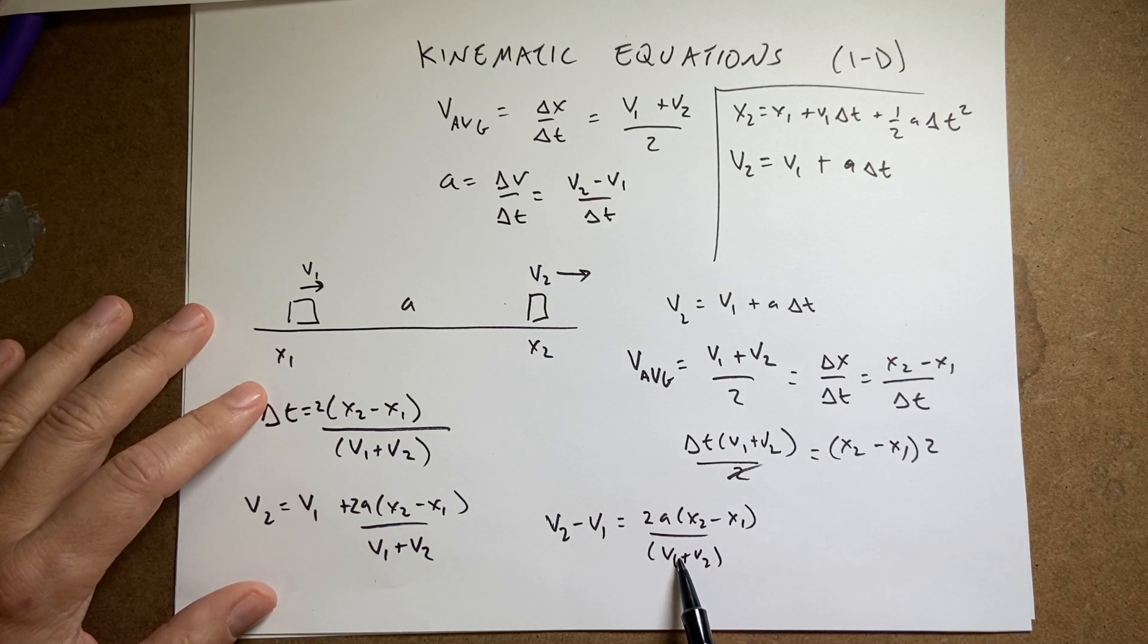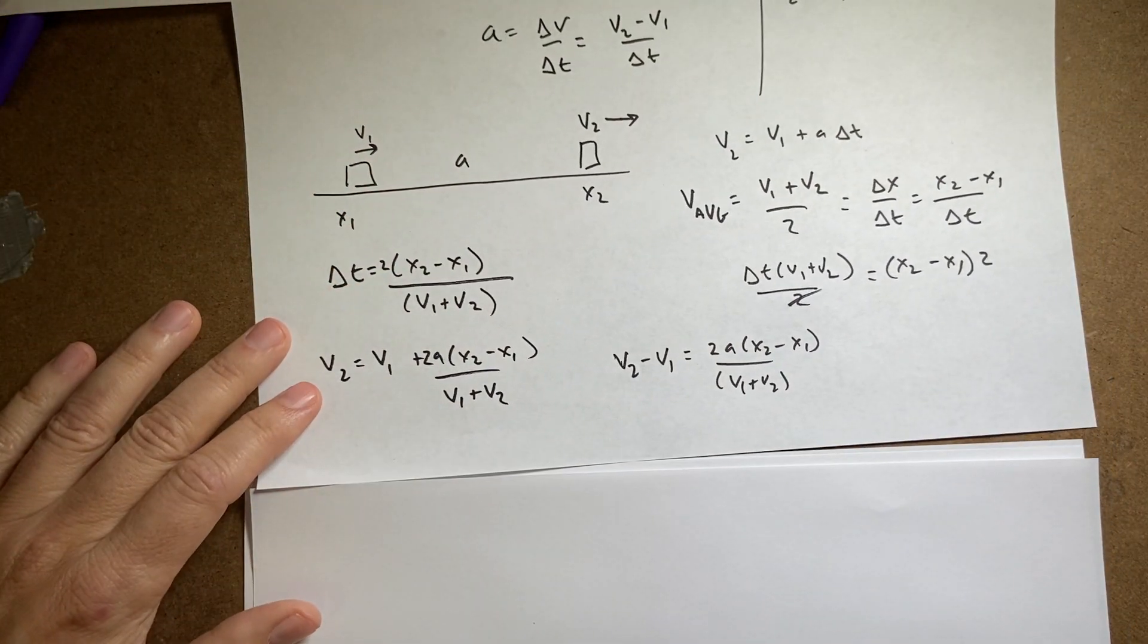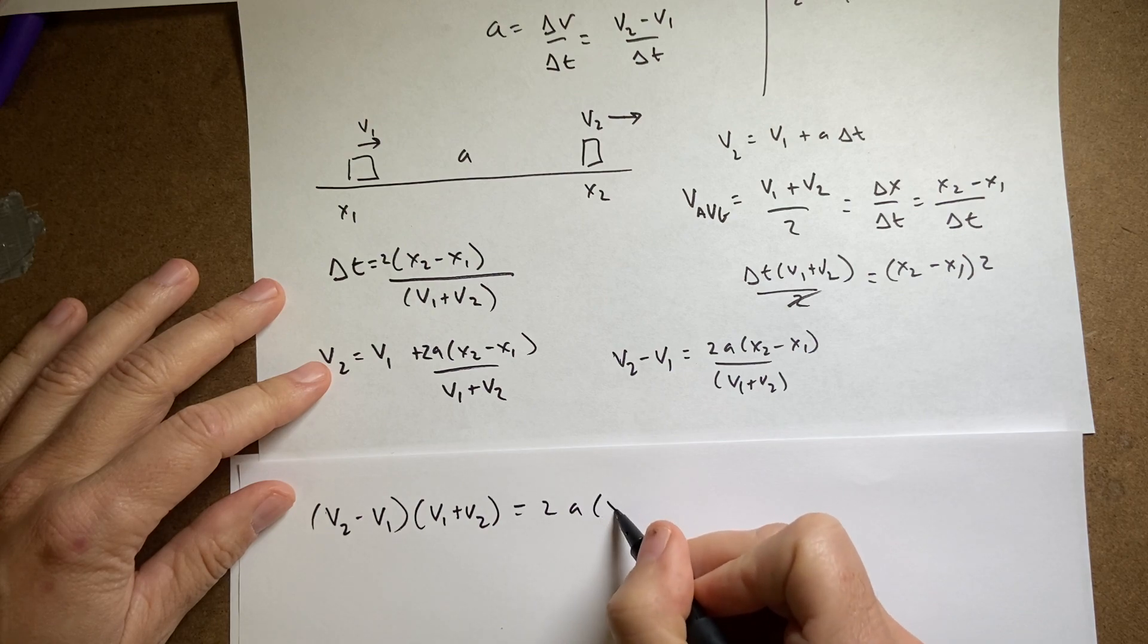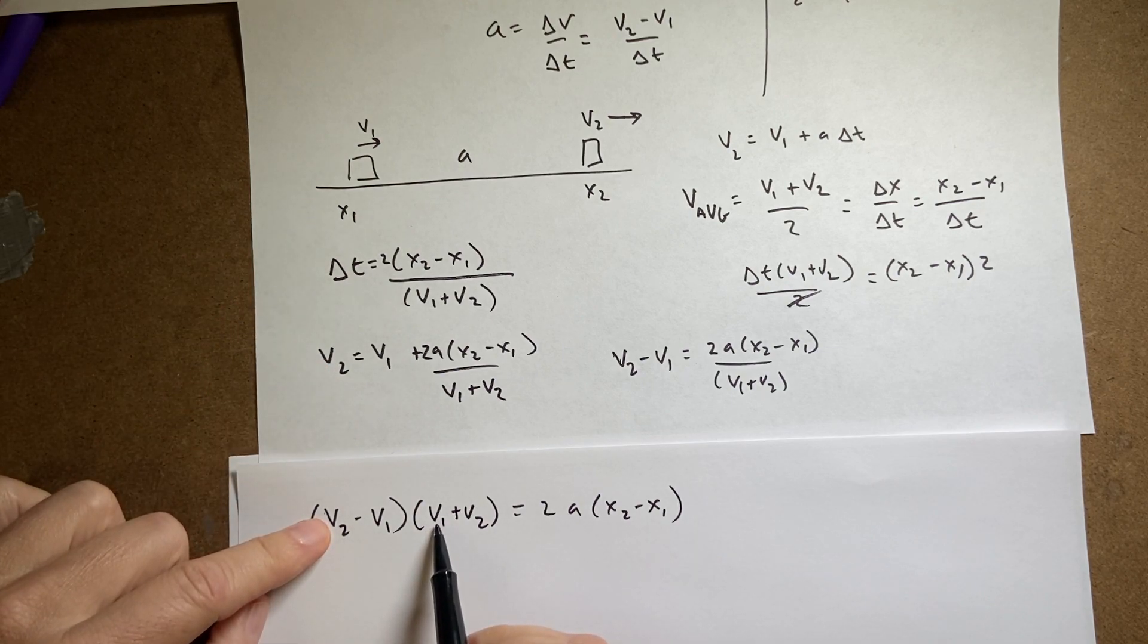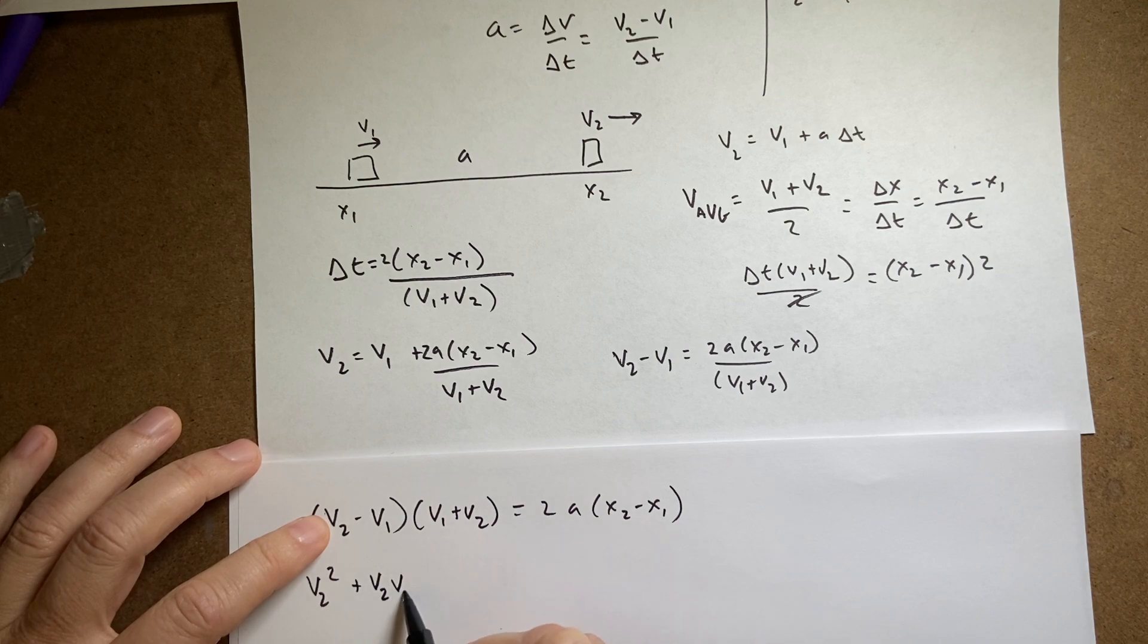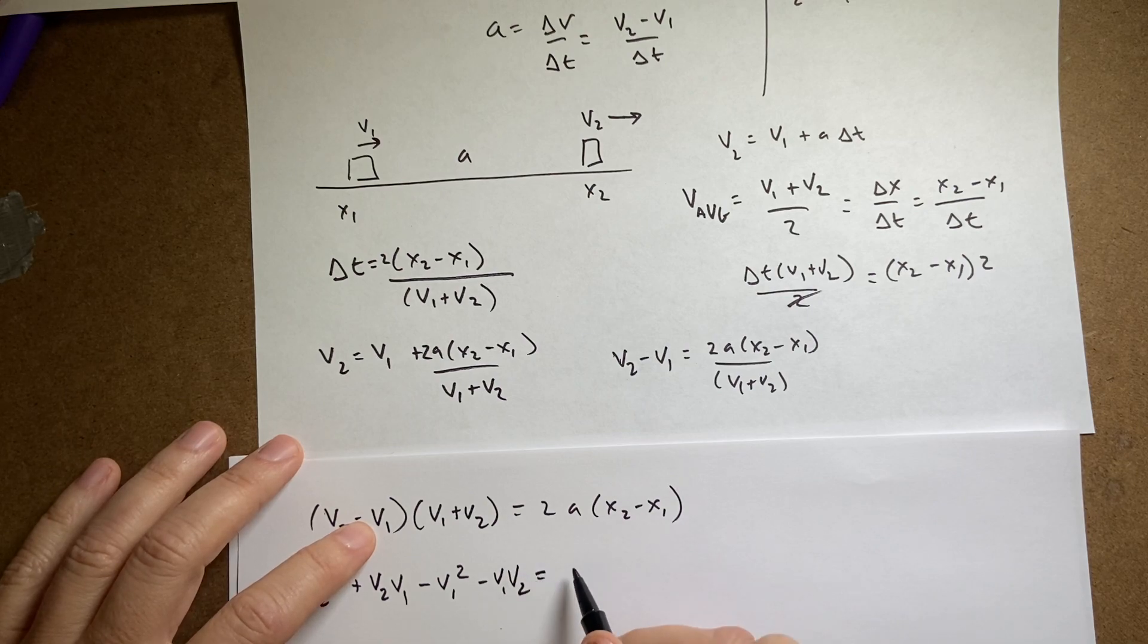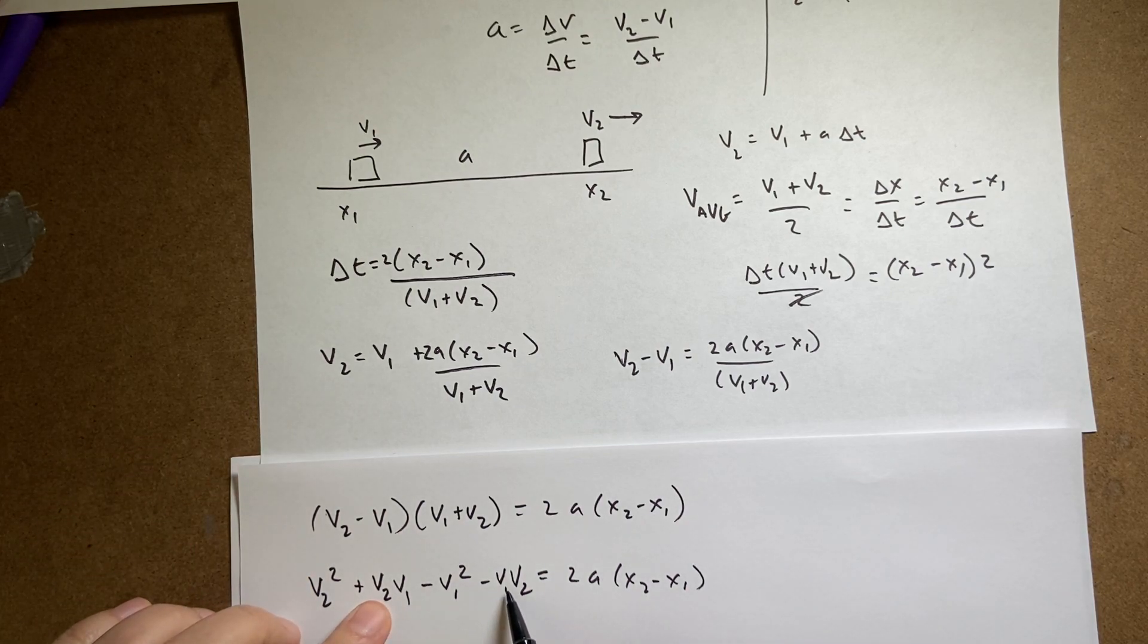Now I'm going to multiply both sides by v1 plus v2 and I get, let's just move to a new sheet of paper. Why make it worse, right? Sometimes you just try to force it in there. I'm not going to do that. So I get v2 minus v1 times v1 plus v2 equals 2 a x2 minus x1. Now I can multiply this out. I get v2 times v2 so I get v2 squared and then I get v2 times v1 so I get plus v2 times v1 and then I get minus v1 times v1 is minus v1 squared and then I get minus v1 times v2 equals 2 a x2 minus x1.